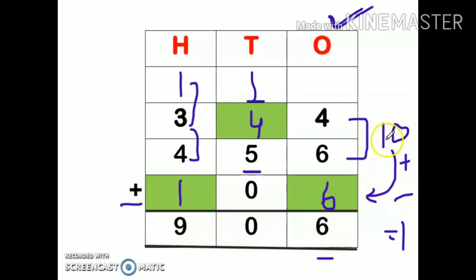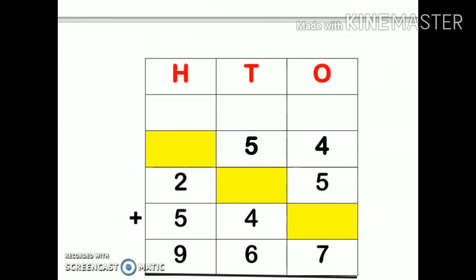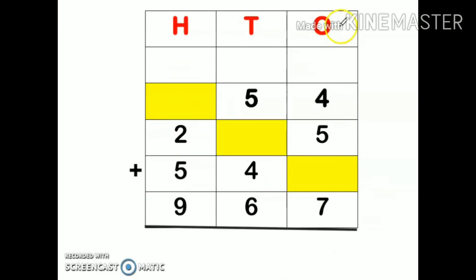Just take one more example. This is my sum, so this is also an addition sum. I will start from ones place. 4 plus 5 is 9, but in the answer it's given 7. In the answer it's given 7, that ones place should be 7.